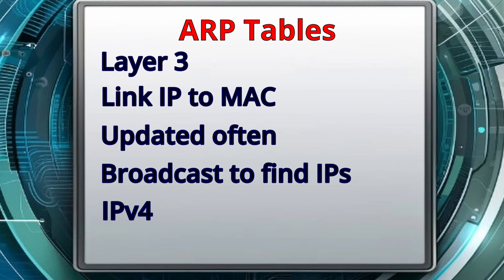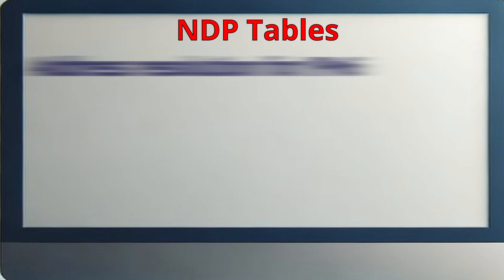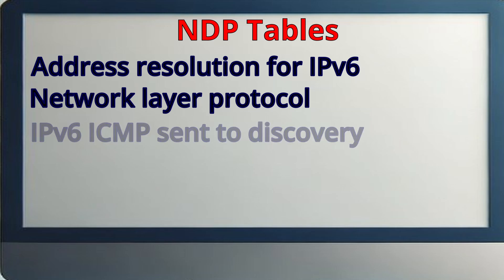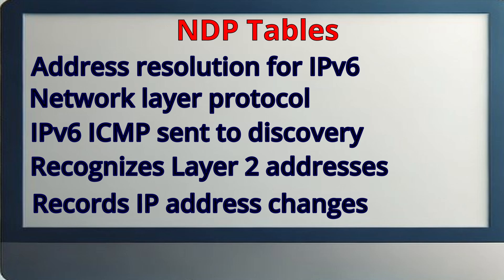This ARP feature only works on IPv4. If you use IPv6, you use the Neighbor Discovery Protocol, or NDP, for address resolution at the network layer. NDP works by sending IPv6 ICMP messages to discover other devices on the same interface. NDP provides improvements over ARP, such as Layer 2 address recognition for neighbors on the same VLAN and recording of IP address changes on VLAN devices. Once two devices in a VLAN connect, the other computer's IP and MAC address are recorded in their own neighbor cache.